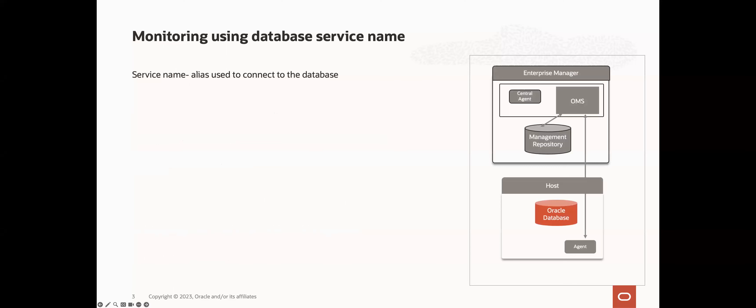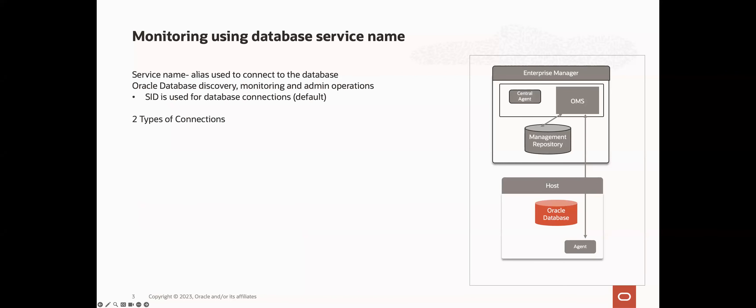A database service is an alias used to connect to the database. Database services are used, for example, in scenarios where you want applications to connect to a preferred subset of RAC nodes. You can create services for your RAC databases, single instance databases, and pluggable databases or PDBs. When Enterprise Manager connects to the database, it uses by default the database SID to connect to the database for discovery, monitoring, and admin operations like creating tables. Here we see two types of connections to the database.